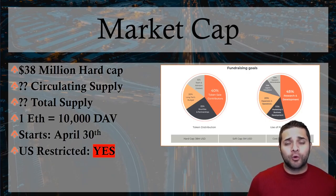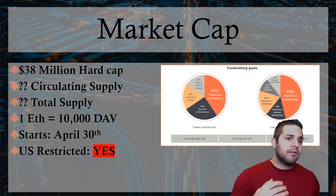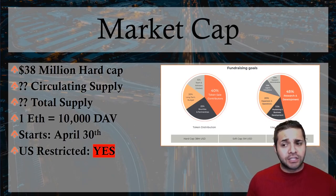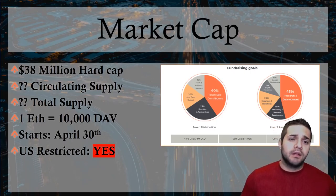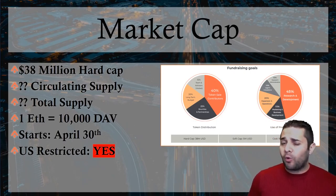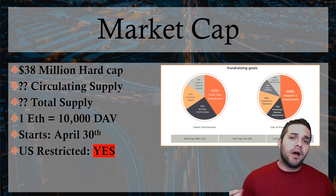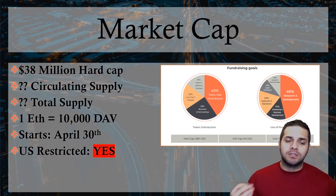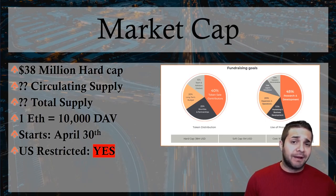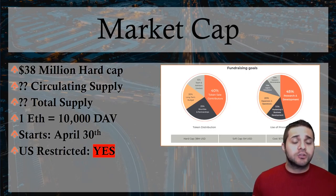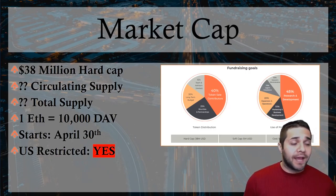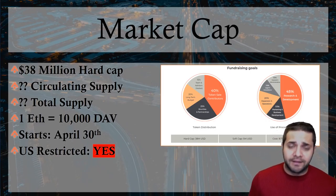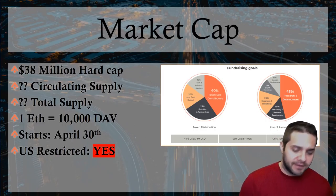For their market cap, we're looking at a $38 million hard cap. That's a little higher than I want, but it's actually not a bad hard cap. We don't know the circulating supply or the total supply yet, but we will know after or during the ICO. One Ethereum equals 10,000 DAV, so we're looking at about 10 cents per token right now based on Ethereum's price. The ICO starts on April 30th, so we have some time to decide. And like a majority of ICOs, the U.S. is restricted from investing.